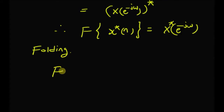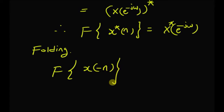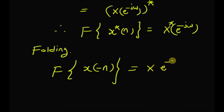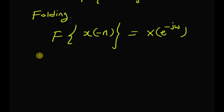The folding property states that the DTFT of x(−n) — that is, the time-folded signal — is equal to X(e^{−jω}). In the frequency domain, ω is replaced by −ω. The proof is straightforward; let us look at the LHS.